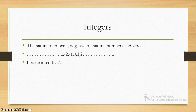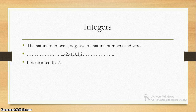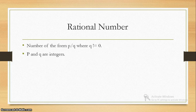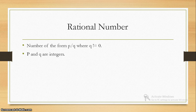Integers — the natural numbers, the negatives of natural numbers, and 0. You consider 0, all positive numbers from 1, 2 and so on up to N, and minus 1, minus 2, up to minus N. This whole collection of numbers is known as integers, denoted by Z. Rational numbers are numbers of the form P by Q where Q is not equal to 0, and both P and Q are integers.